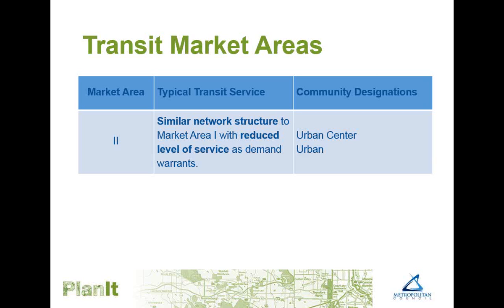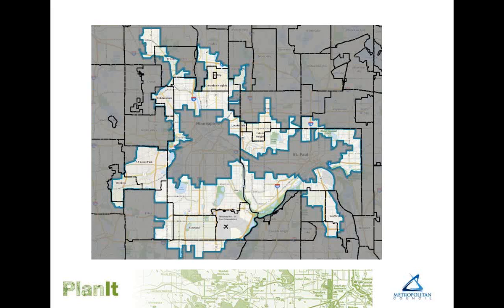Transit market area two has a similar pattern of development as transit market area one, but with lower population and employment densities. Service does include local routes, but frequency and the span of service over the day may be lower. This map shows the extent of transit market area two, which includes the remainder of Minneapolis and St. Paul, and several older urban center and urban communities like the inner-ring suburbs of St. Louis Park, Robbinsdale, Columbia Heights, and South St. Paul.